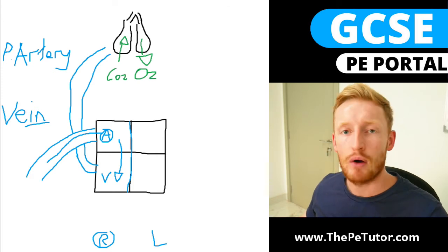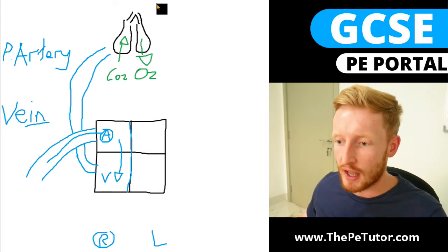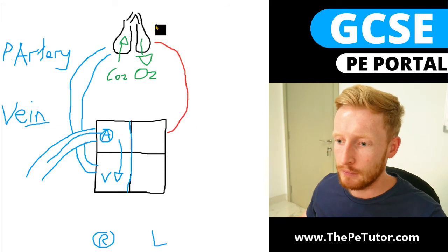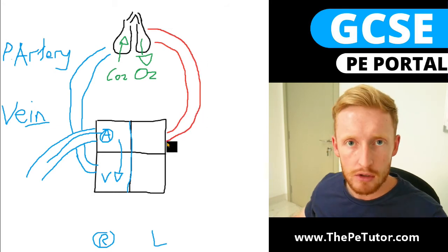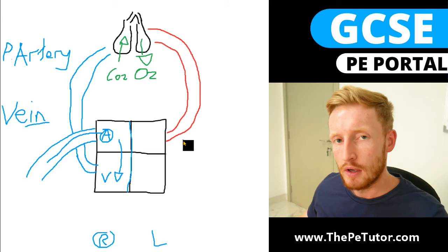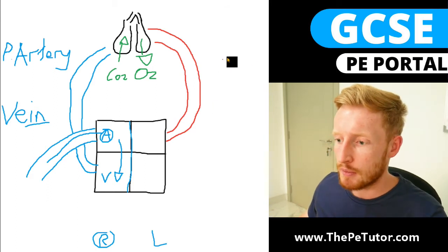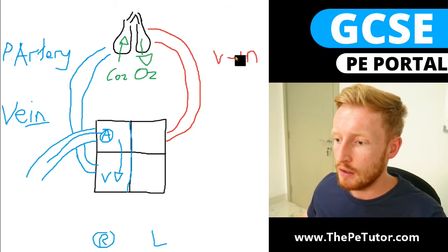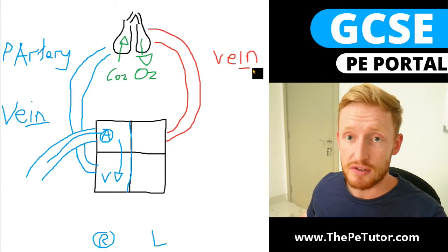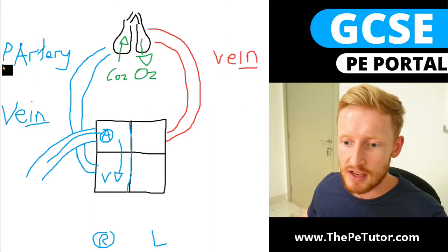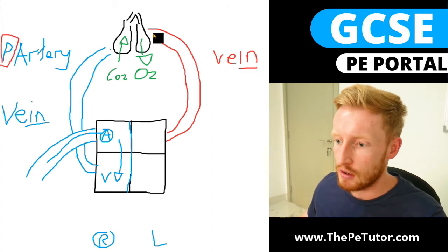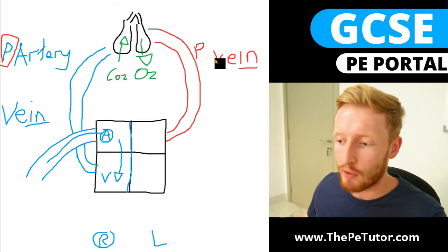In the lungs, we've got gas exchange occurring — CO2 out and O2 in — meaning we now have oxygenated blood. That oxygenated blood is going to come down and return back into the heart. Since blood is going into the heart, think about that spelling — vein. We know it makes up the second half of the pulmonary circuit, so we know it to be the pulmonary vein.